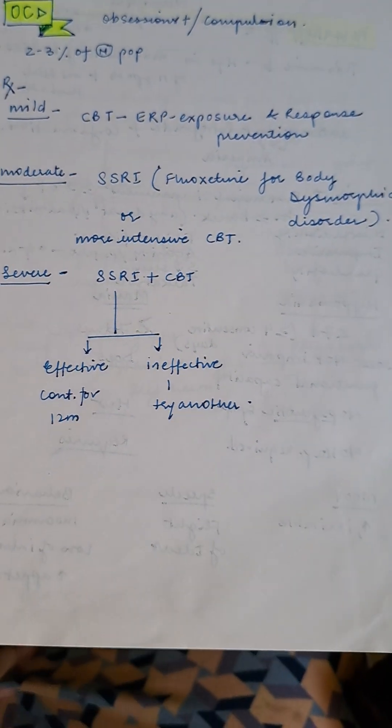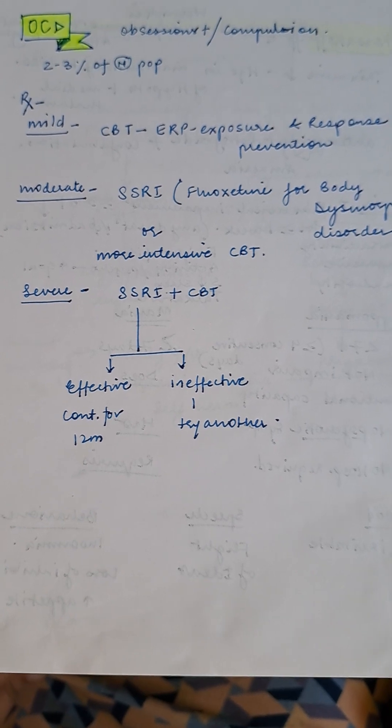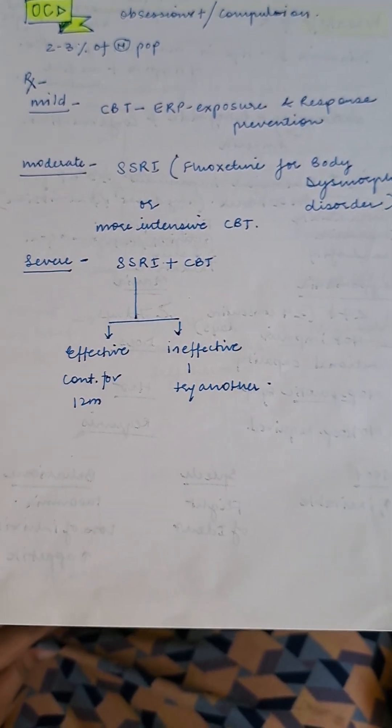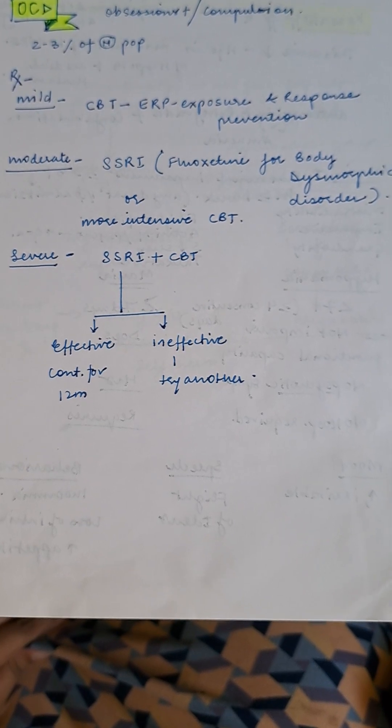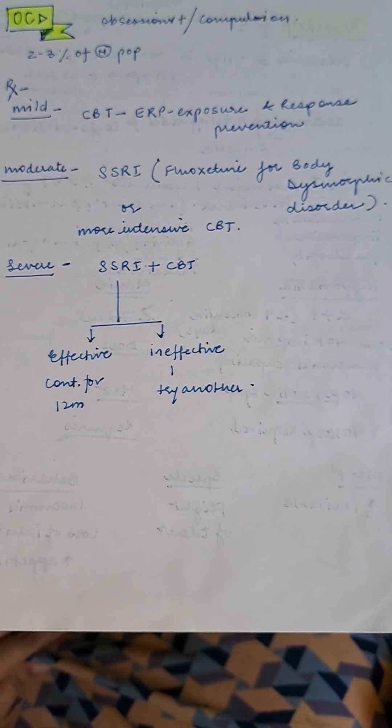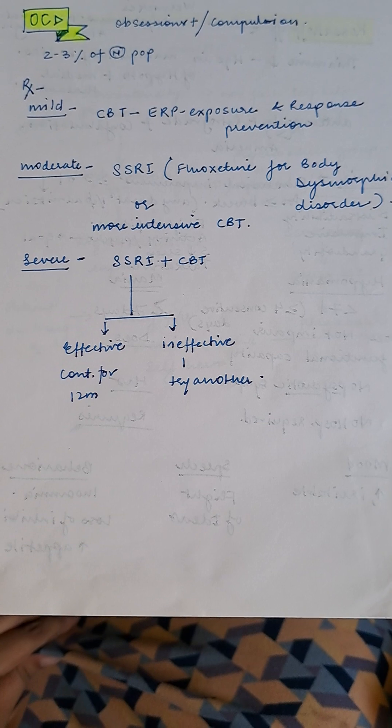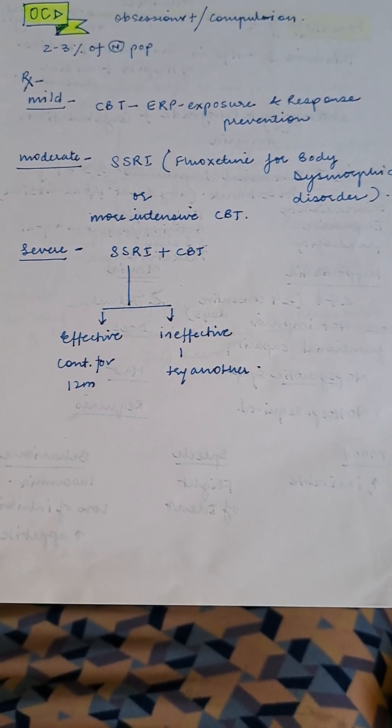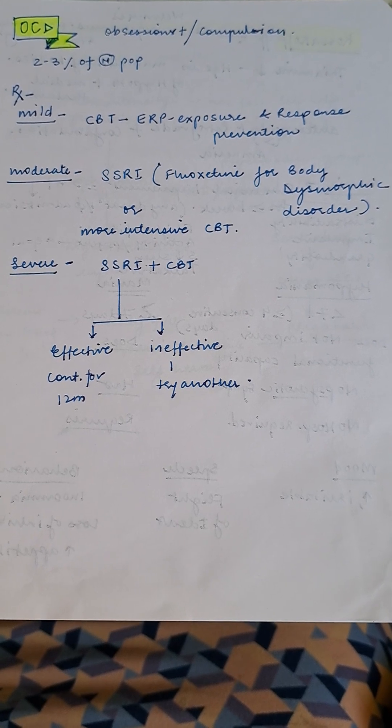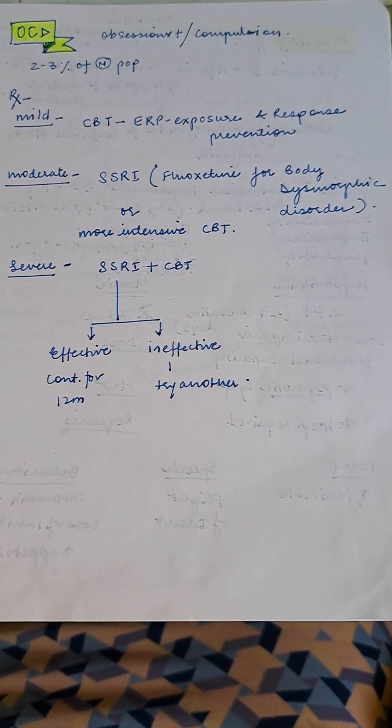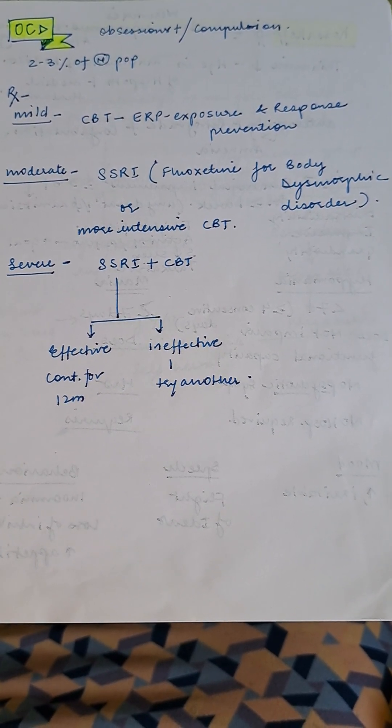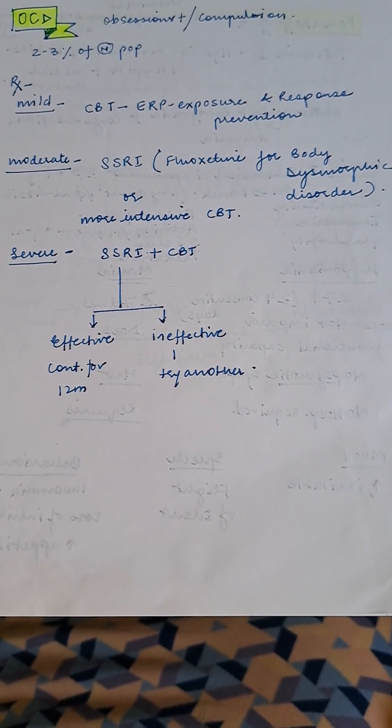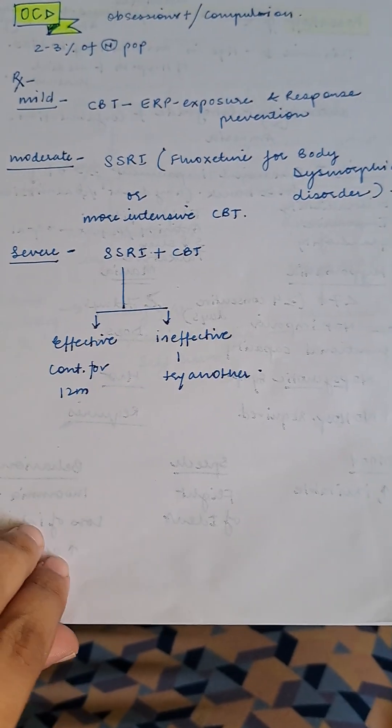OCD - obsessions plus compulsions. Two to three percent of normal population have OCD. Treatment: mild cases get CBT or exposure and response prevention. Moderate: give SSRI fluoxetine for body dysmorphic disorder, or more intensive CBT. Severe cases: SSRI plus CBT. If effective, continue for 12 months. If ineffective, try another.